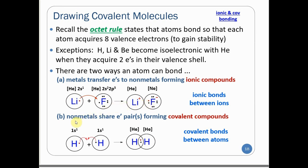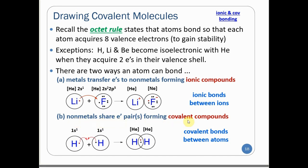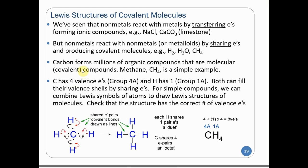The other option is nonmetals reacting with other nonmetals, in which case neither is able to take or give electrons. So they share electron pairs, forming covalent bonds. The simplest example is hydrogen sharing with another hydrogen — each has one electron in the valence shell, and both electrons are shared by both atoms. We'll look primarily at nonmetals and metalloids reacting by sharing electrons to produce covalent molecules.